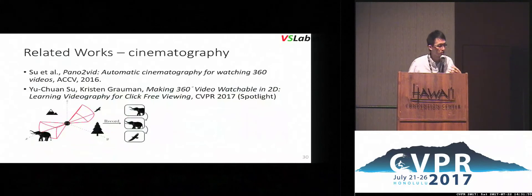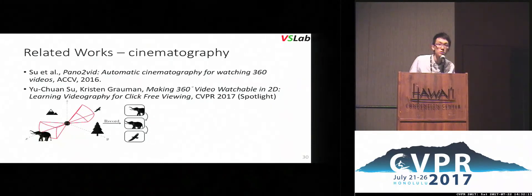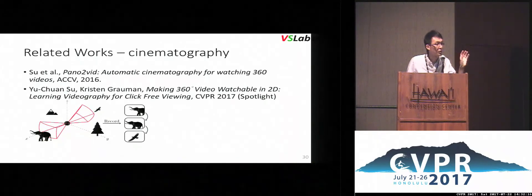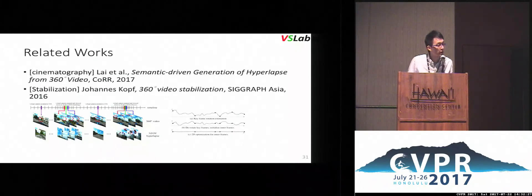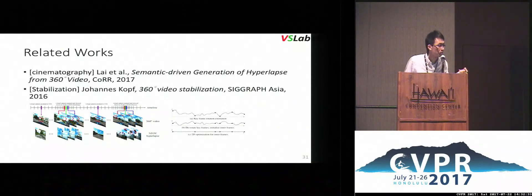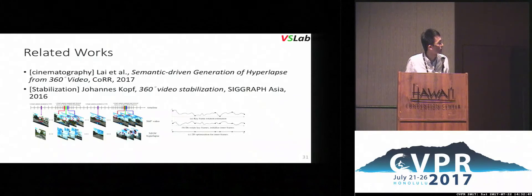We are not the first doing 360 video research. The most related work is Sue et al. from UT Austin, who proposed Pano2VR — an offline method that can steer the viewing angle every five seconds. Other related work includes line analysis converting 360 videos into hyperlapse in normal field-of-view format using semantic saliency, and work by Coff on stabilization of 360 videos.